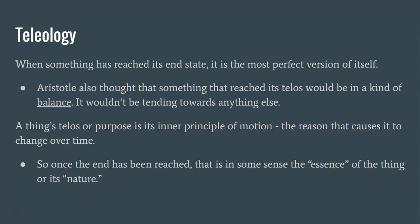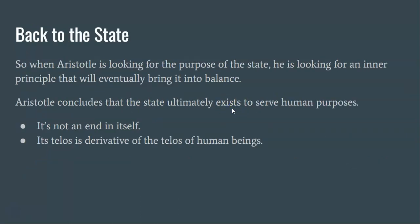Aristotle also thought that something that reached its telos would be in a kind of balance — it wouldn't be tending towards anything else because it would have reached a steady state. A thing's telos, therefore, or its purpose, is its inner principle of motion, the reason that causes it to change over time. Once that end has been reached, that is in some sense its essence or its true nature. So when Aristotle is looking for the purpose of the state, he's looking for an inner principle that will eventually bring it to balance. Aristotle concludes that the state will ultimately exist to serve human purposes — the state is not an end in itself. Its telos is derivative of the telos of human beings; it is good for the sake of something else, namely us.